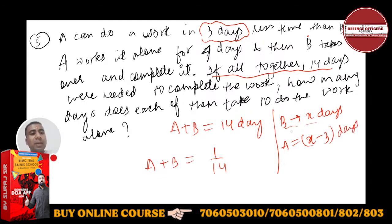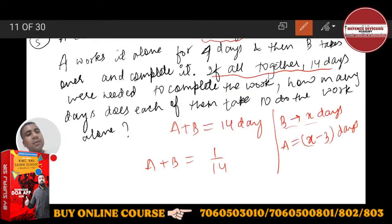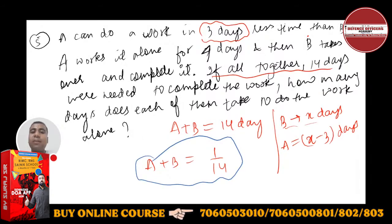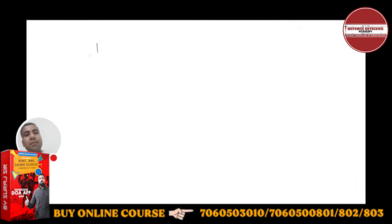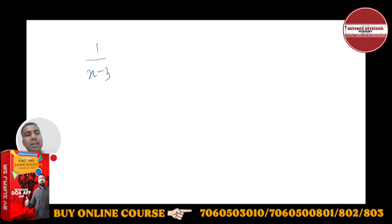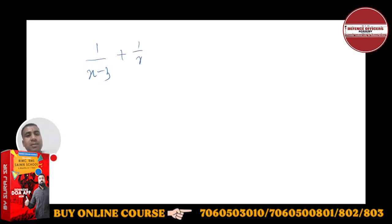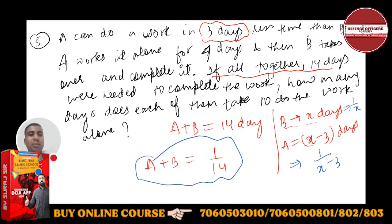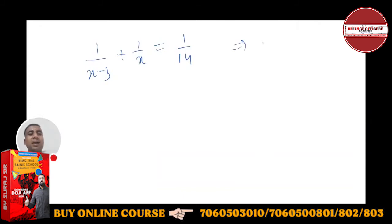B's one day work will be one upon x. A's one day work will be one upon x minus three. When you put these values, one upon x minus three plus one upon x will be going to give you 1 by 14. So here you can easily calculate x.